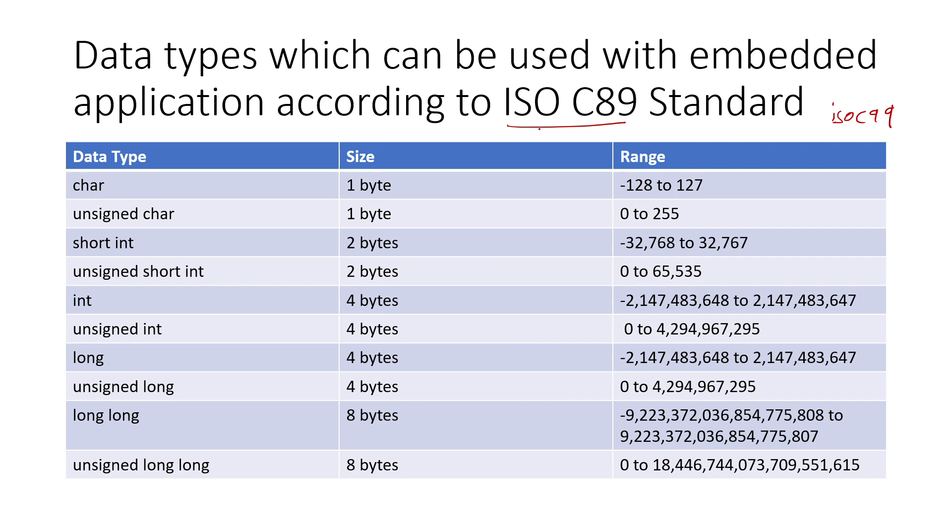Most are aware of ISO C89 standard data types: char, unsigned char, short int, unsigned short int, int, unsigned int, long, unsigned long, long long, and unsigned long long. These are hardware specific and vary from CPU to CPU or platform to platform.